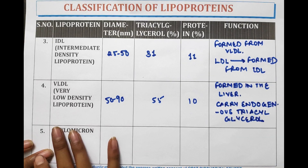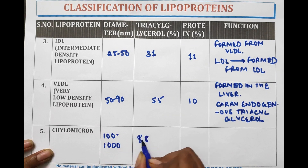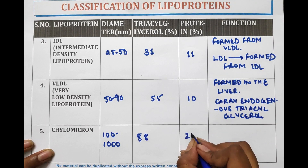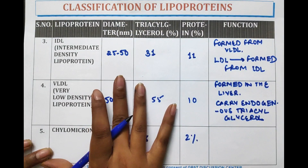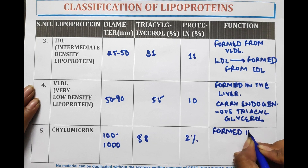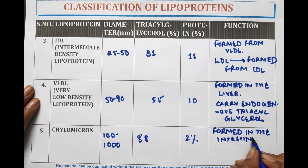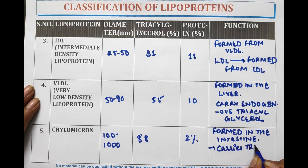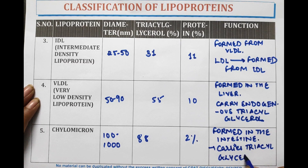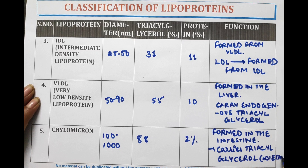Chylomicron has a diameter of 100 to 1000 nanometers. It contains 88% triacylglycerol and 2% protein. It is formed in the intestine and it carries dietary triacylglycerol.